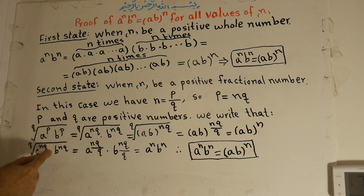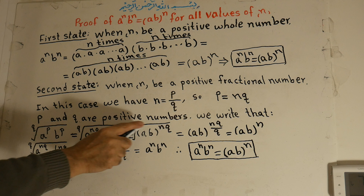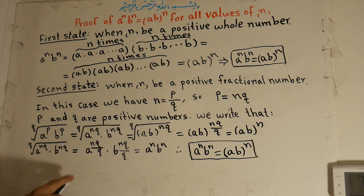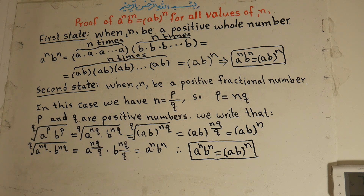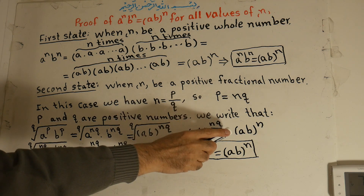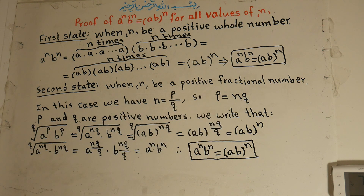In the other direction: a to the power of nq times b to the power of nq, under the q-th root, equals a to the power of nq over q. We can separate this as a to the power of nq over q times b to the power of nq over q. Q cancels with q in both, giving a to the power of n times b to the power of n. Therefore, a to the power of n times b to the power of n equals ab all to the power of n.